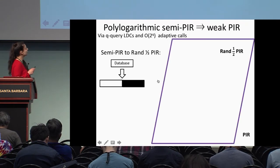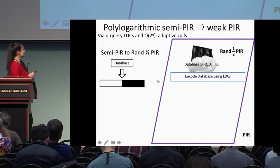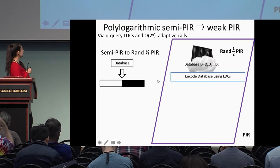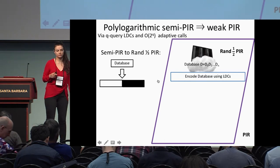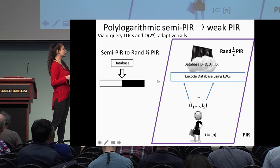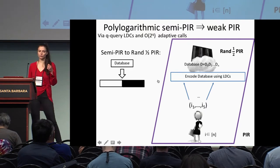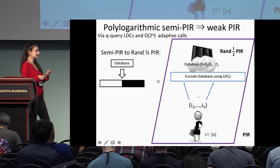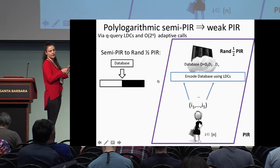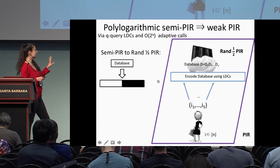Now I'll show how to construct PIR from RAND half-PIR. The server encodes his database using a locally decodable code. Then the client runs the decoder of the locally decodable code to get the index he's interested in. Locally decodable codes can be viewed as one-round multi-server PIR: to access entry i in the original database, we need q queries to the codeword database. I assume q = 5 on this slide.